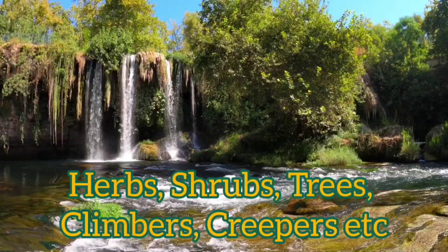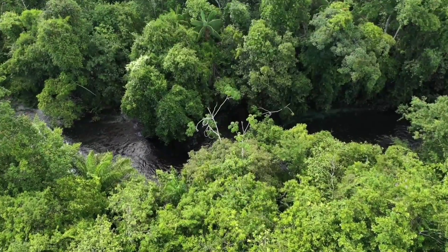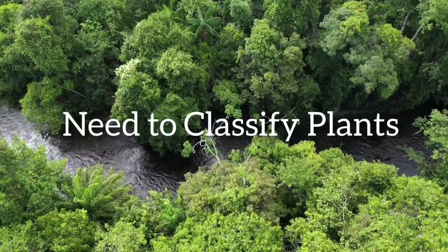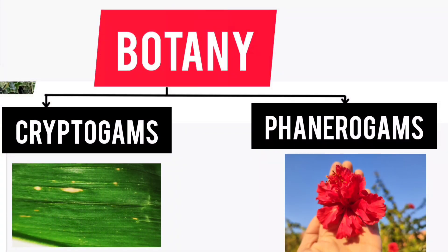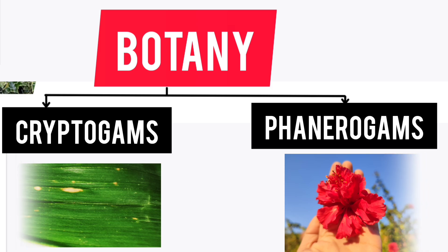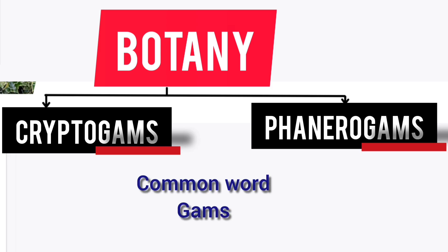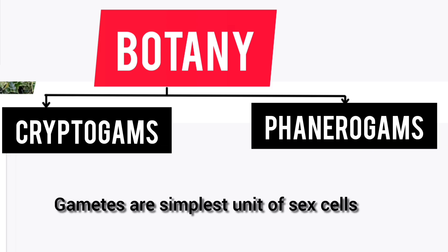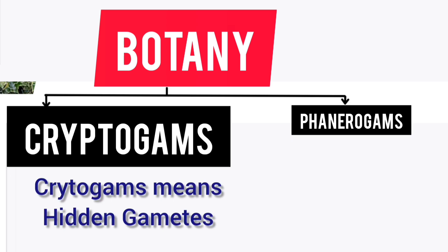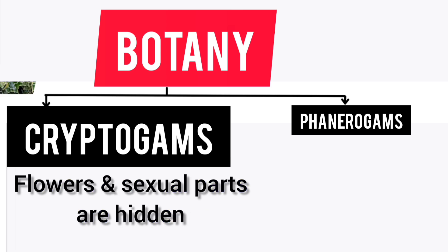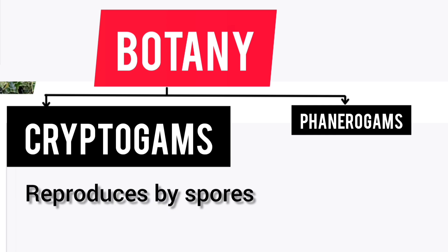In this diversity of plants we learn herbs, shrubs, trees, climbers, creepers, etc. That's why there is a need to classify plants. We differentiate all of these into two parts: cryptogams and phanerogams. Both share the root word 'gams,' meaning gametes — the simplest unit of sex cells. 'Crypto' means hidden or invisible, so cryptogams means hidden gametes, where flowers and sexual parts are hidden.